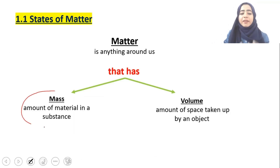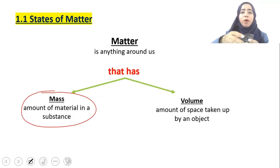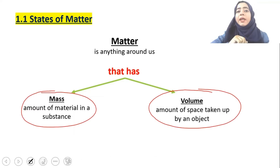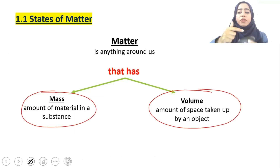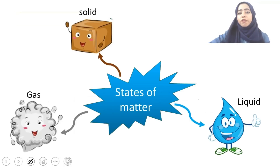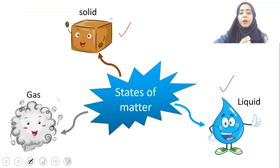What is matter? Matter is anything around us which has some mass. Mass means how much amount of material is present in a substance. Matter also has volume — how much space the material is going to take up is called its volume.